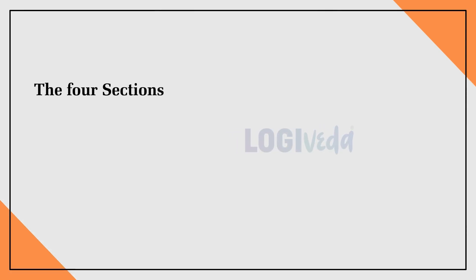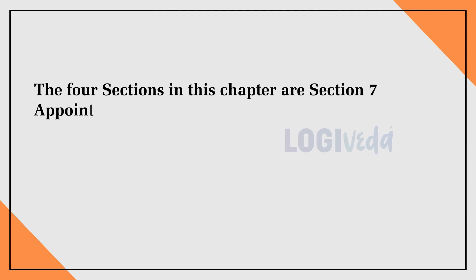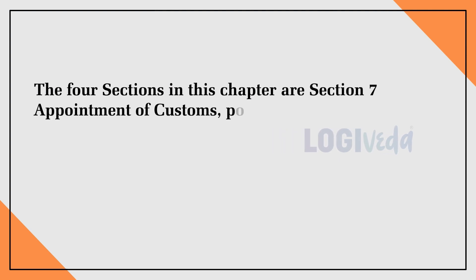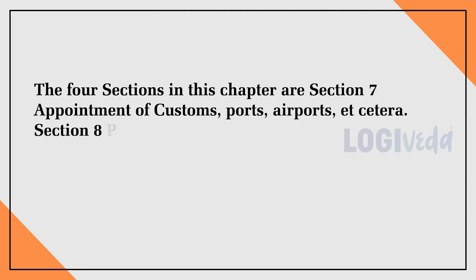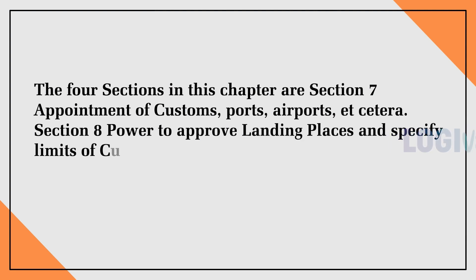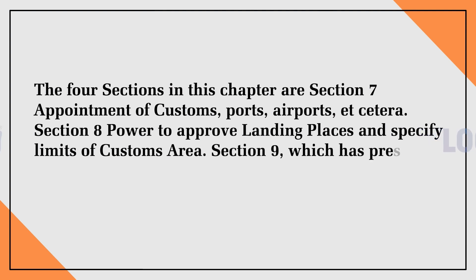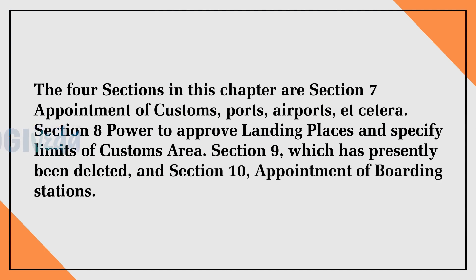The four sections in this chapter are: Section 7 - appointment of customs ports, airports, etc.; Section 8 - power to approve landing places and specify limits of custom area; Section 9 - which has presently been deleted; and Section 10 - appointment of boarding stations.